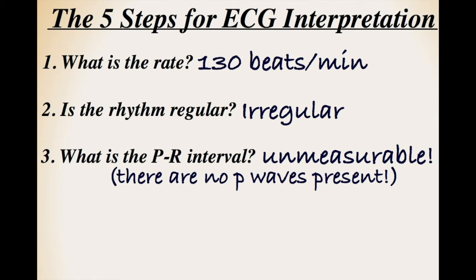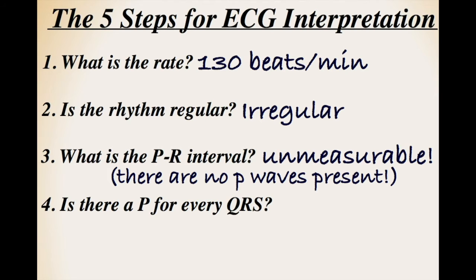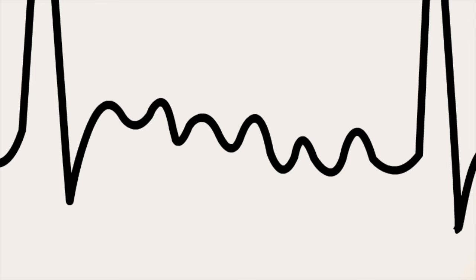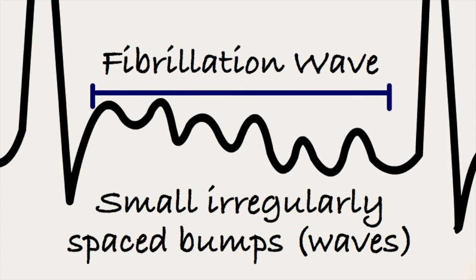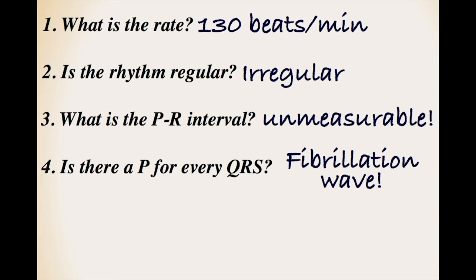Next, we want to check that there is a P-wave for every QRS complex and a QRS complex for every P-wave. As we have already discovered, on this ECG there are no P-waves. Instead, we have what is known as a fibrillation wave. These small irregularly spaced bumps represent the rapid and irregular electrical activity we see in the atrium during AF. A fibrillation wave is another of the diagnostic features of AF.